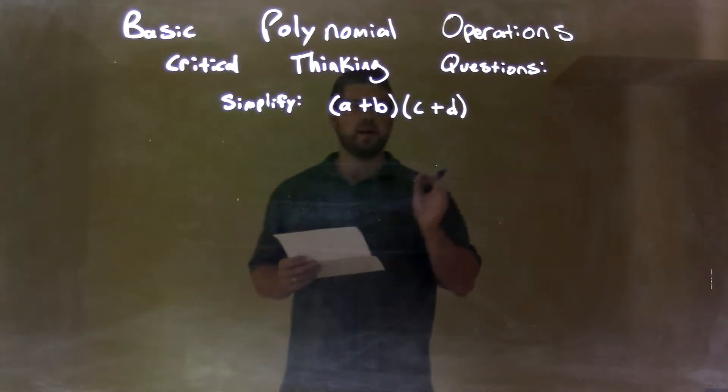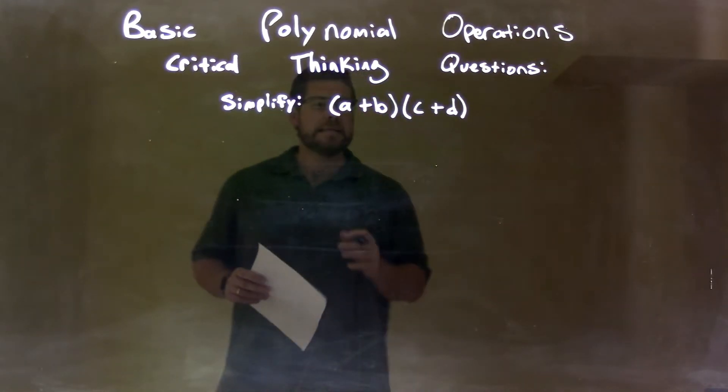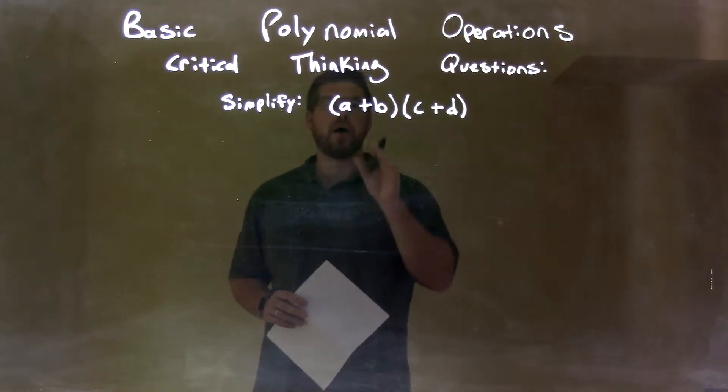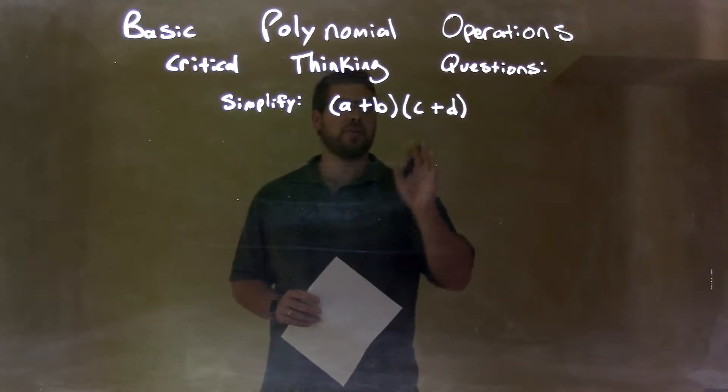Well, you have (a + b)(c + d). Now, these are all variables. The same rules still apply. We multiply all parts of my first parenthesis by all parts of my second parenthesis.